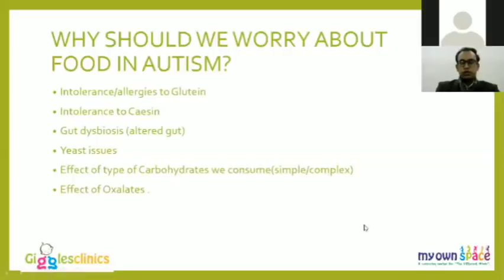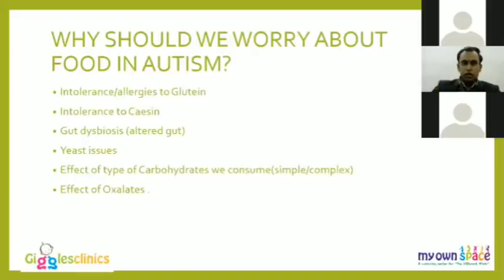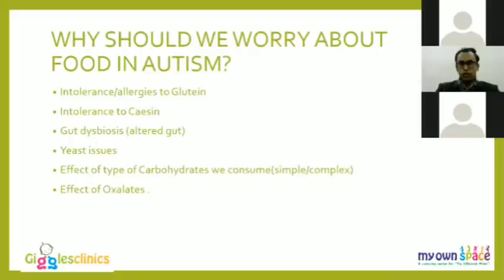The most important question is why we should worry about food in autism. There are many myths — for instance, that if one child benefits from a GFCF diet, every child should follow it, or that the same diet that helps one child will help another. We need to understand the major factors that make food important in autism, starting with intolerance or allergies to gluten. There is a significant difference between intolerance and allergy, and we are more concerned with intolerance related to gluten and casein in autism.